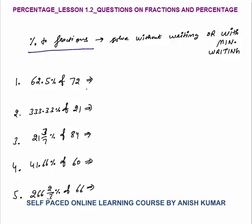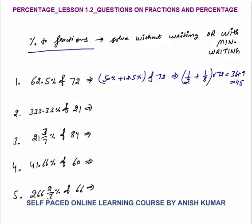So first is 62.5% of 72. You can break it like this: 50% plus 12.5% of 72. Now 50% of 72 — 50% means half. 12.5% is 1/8 of 72; of means multiply. So you will get your final answer as 36 plus 9, which equals 45. You must be able to solve this verbally.